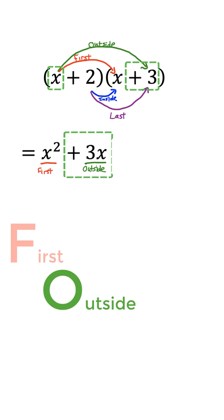The O stands for outside, which tells us that the very outside terms of this product, the x and the 3, will have to get multiplied by each other. And that product of x and 3 is just 3x, you see that written below as well.